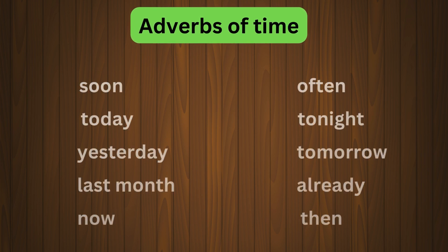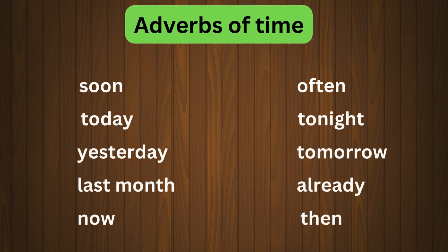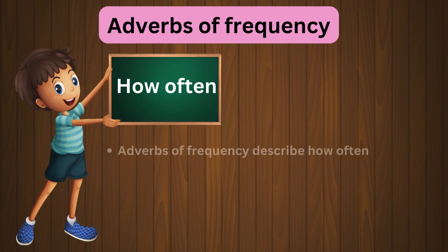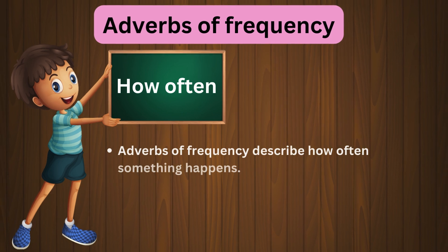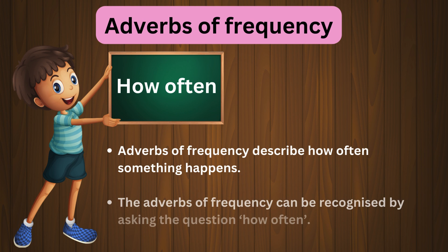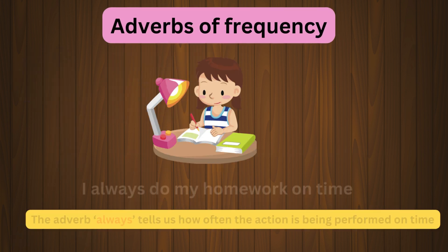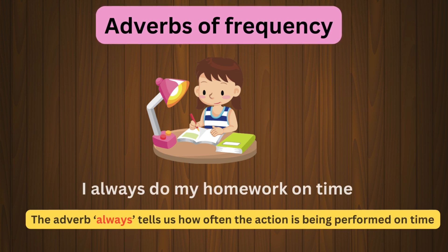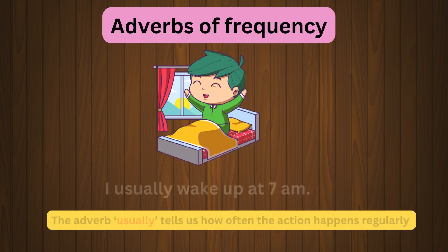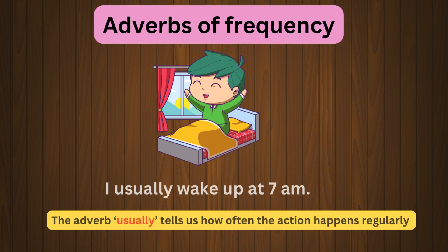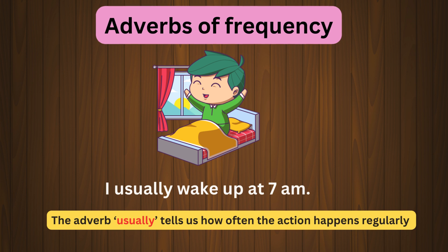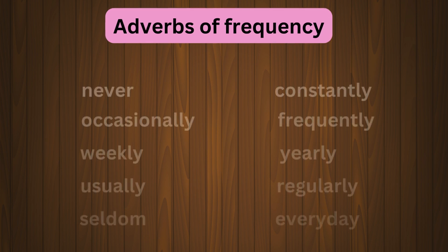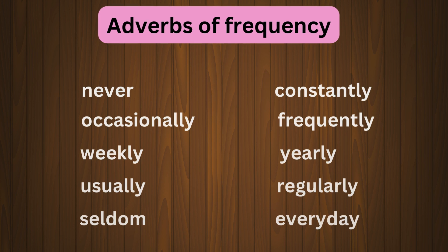These are some examples of adverbs of time that show when the action will happen. Next we see adverbs of frequency. Adverbs of frequency describe how often something happens. They can be recognized by asking the question 'how often.' For example: I always do my homework on time — the adverb 'always' tells us how often the action is performed. I usually wake up at 7am — the adverb 'usually' tells us how often the action happens regularly.